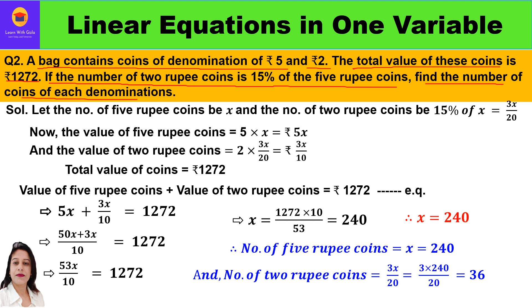We have to find the number of coins of each denomination — that means how many 5-rupee coins and how many 2-rupee coins we have. The total value of these coins is rupees 1272. They are also saying the number of 2-rupee coins is 15% of the number of 5-rupee coins, meaning the number of 2-rupee coins depends on the 5-rupee coins.